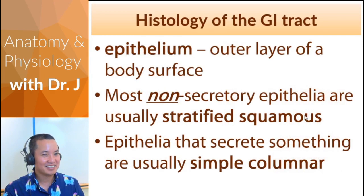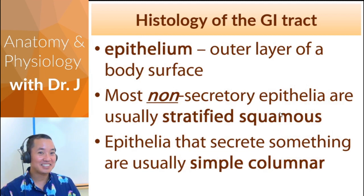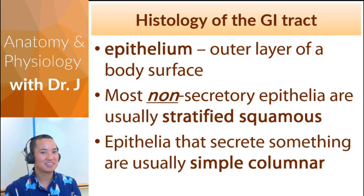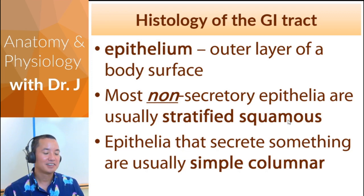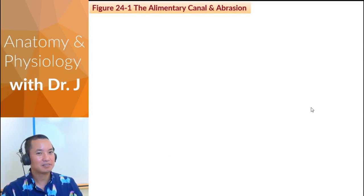Now for histology. The epithelia of the GI tract fall into two categories: stratified squamous or simple columnar. The alimentary canal always has food coming in through the mouth and exiting via the anus.